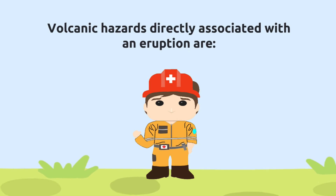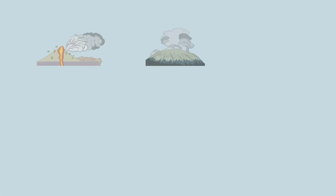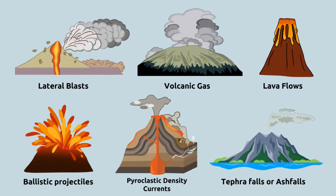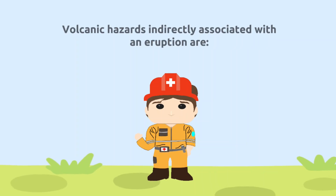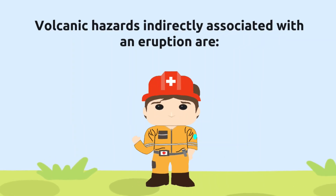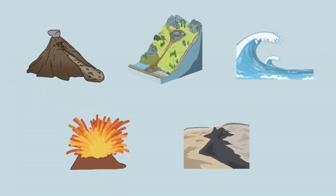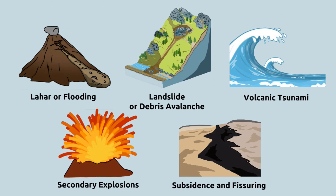Volcanic hazards directly associated with an eruption include various primary effects. Volcanic hazards indirectly associated with eruption are lahar or flooding, landslide or debris avalanche, volcanic tsunami, secondary explosions, and subsidence and fissuring.